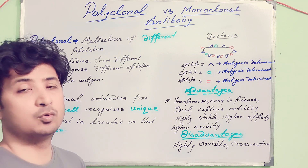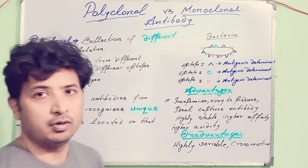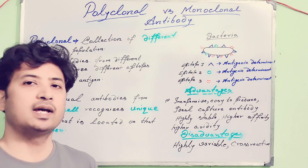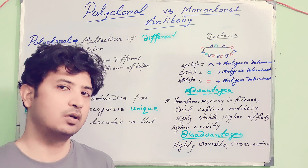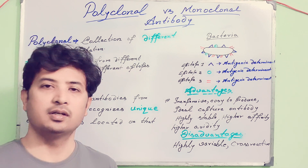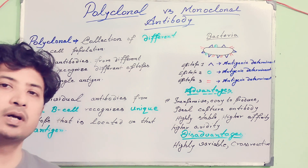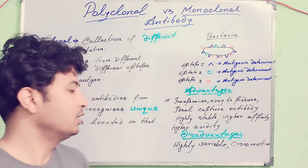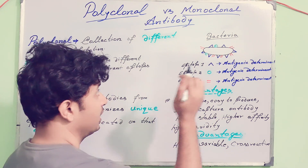A polyclonal antibody is a collection of B-cells — it is a mixture of B-cells, because antibodies are produced by B-cells. If you consider a particular B-cell as a clone, then polyclonal is a mixture of several clones of B-cells. Each B-cell will make a particular type of antibody against a particular type of antigen or epitope. Let's take the example I have drawn here: a single bacterium.